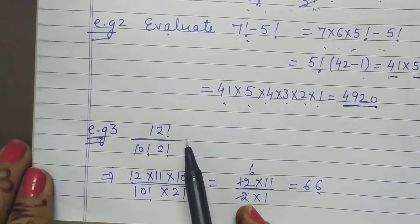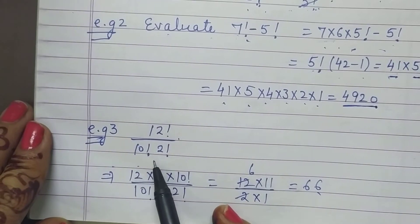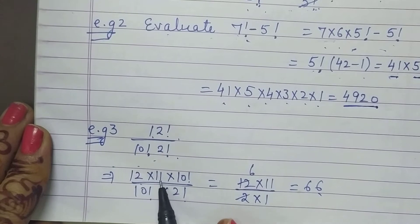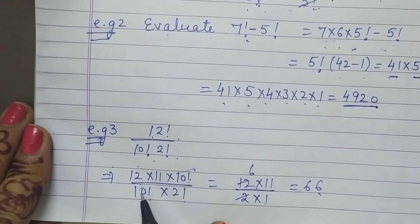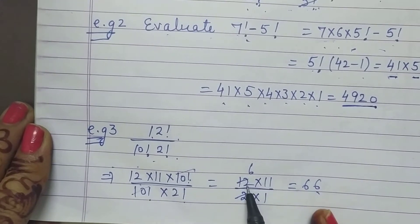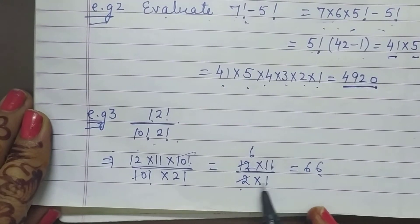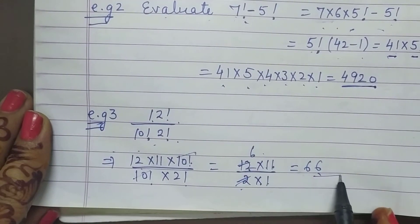Now I will move to next example. 12 factorial divided by 10 factorial times 2. So what can you write for 12? 12, 11, 10 factorial. 10 and 10 cancel. So what is left? 12 into 11 upon 2. 2 cancels this. So you got the answer.